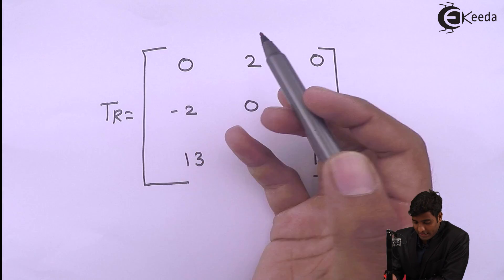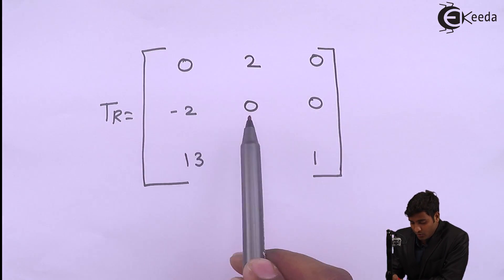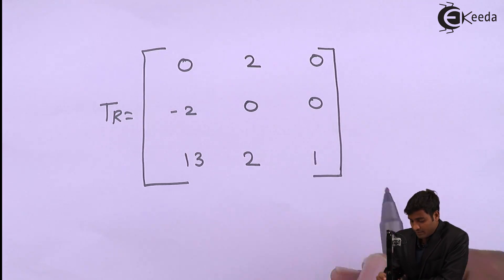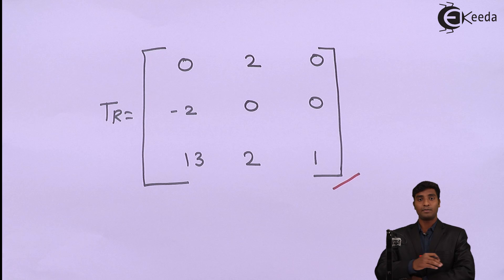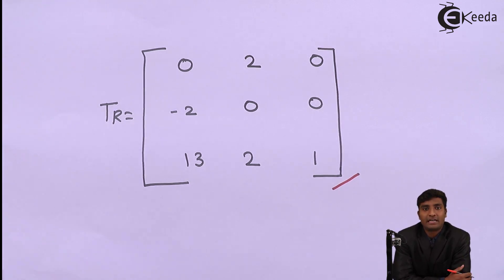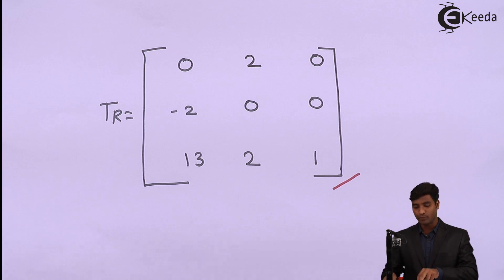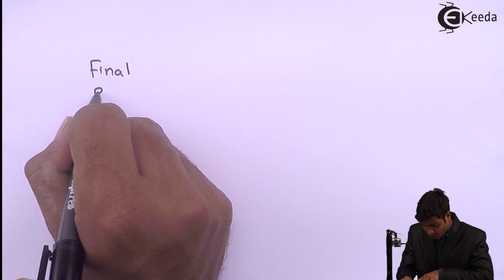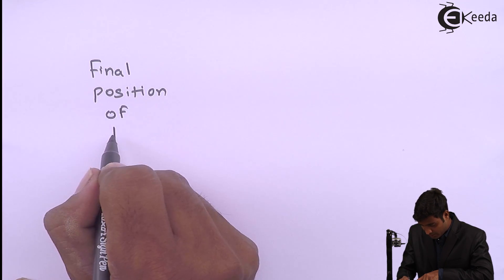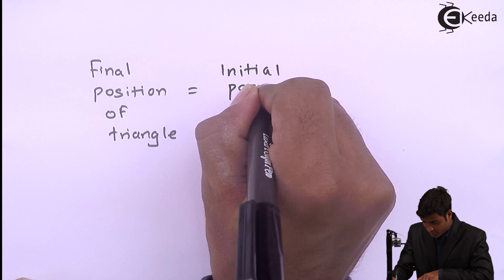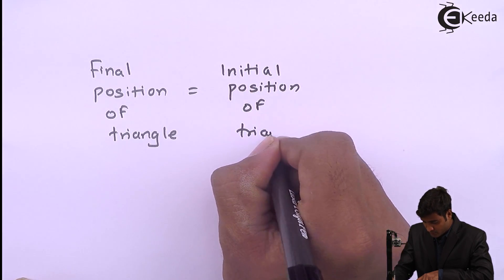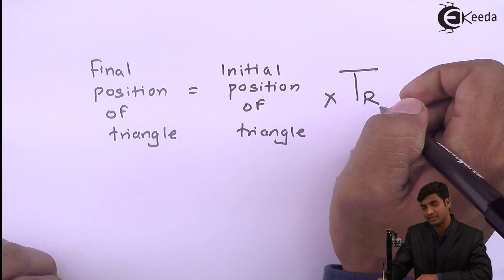The final total transformation matrix TR I obtained after multiplying all the matrices — translation, scaling, and rotation — is [0,2,0 / -2,0,0 / 13,2,1]. The problem also asks to find the final position of the triangle. The formula is: final position = initial position × TR.